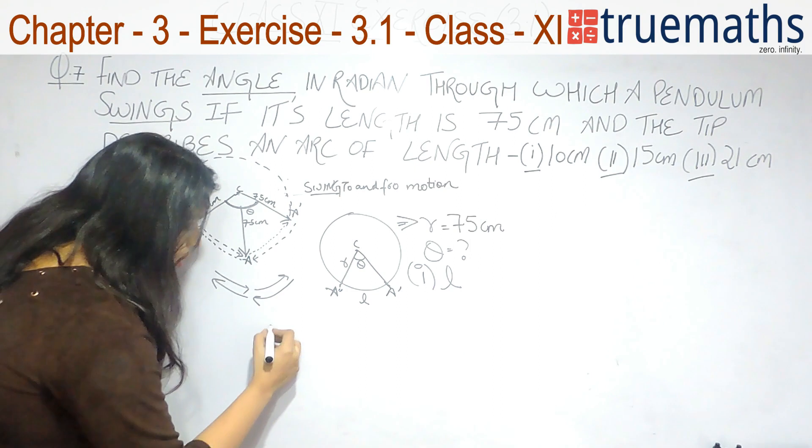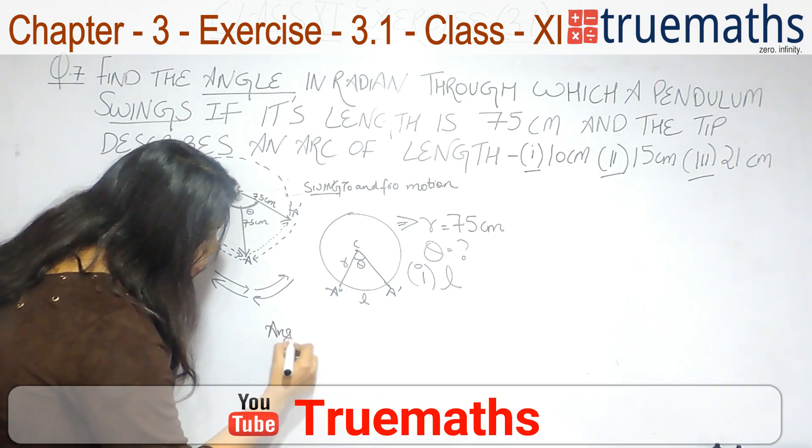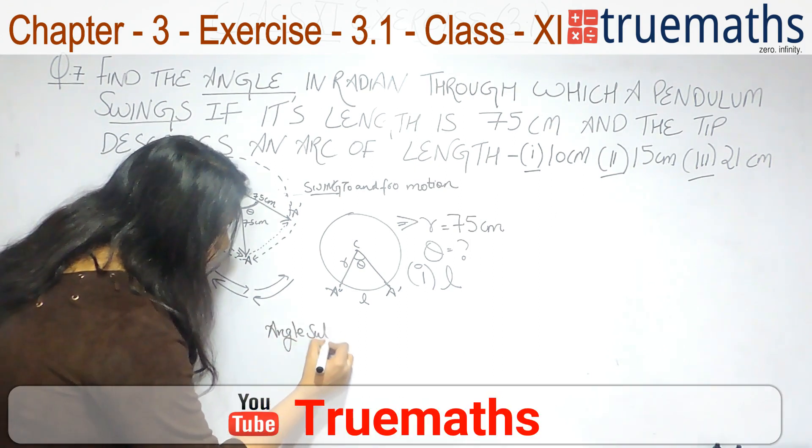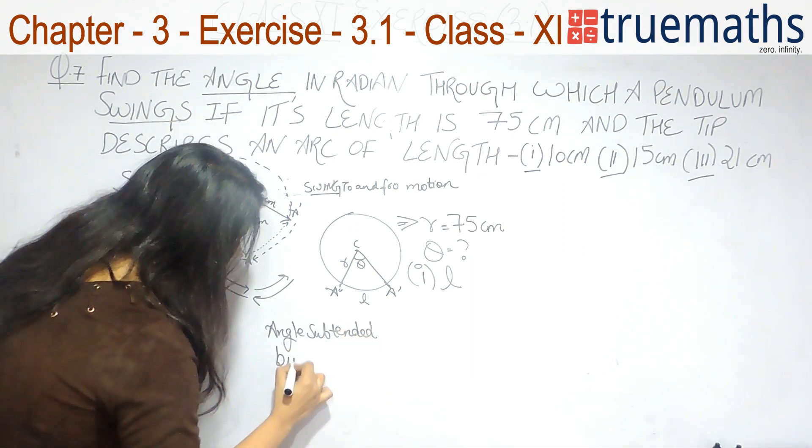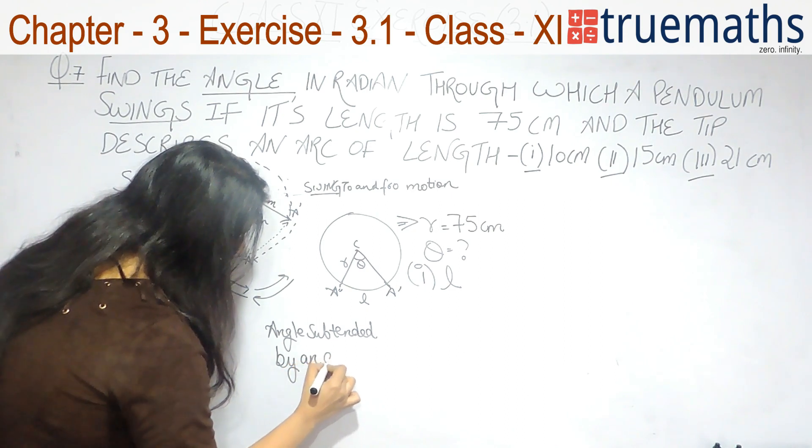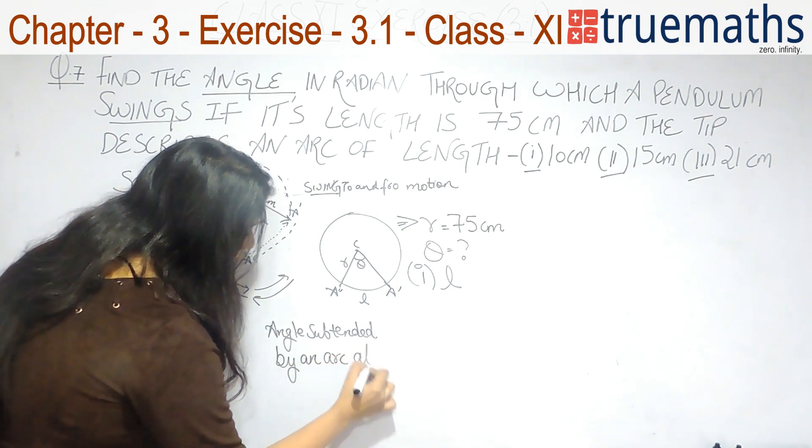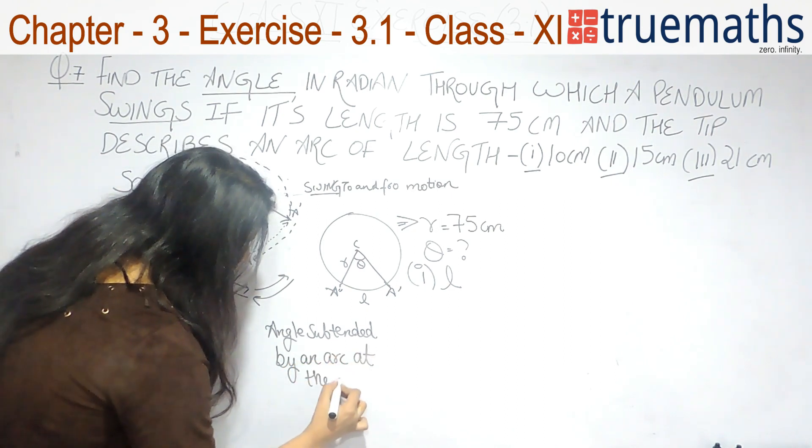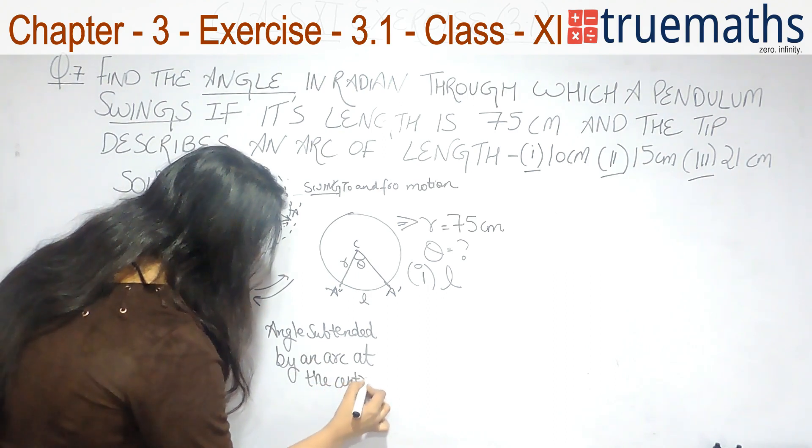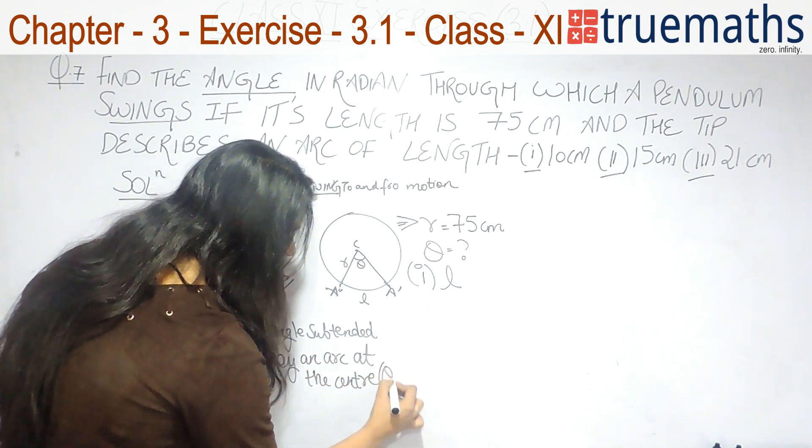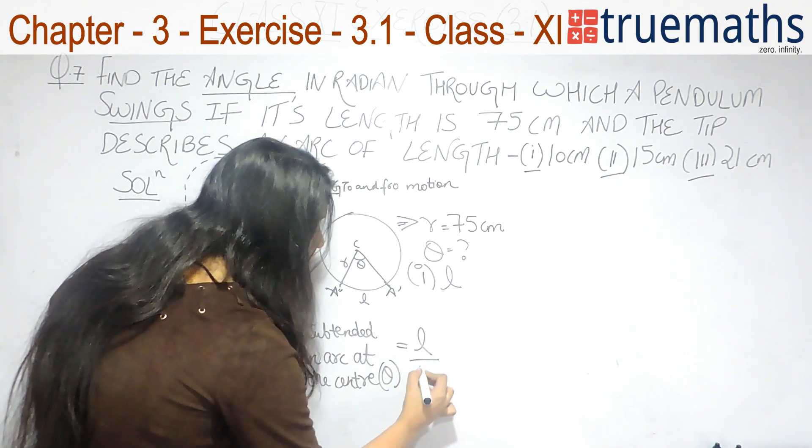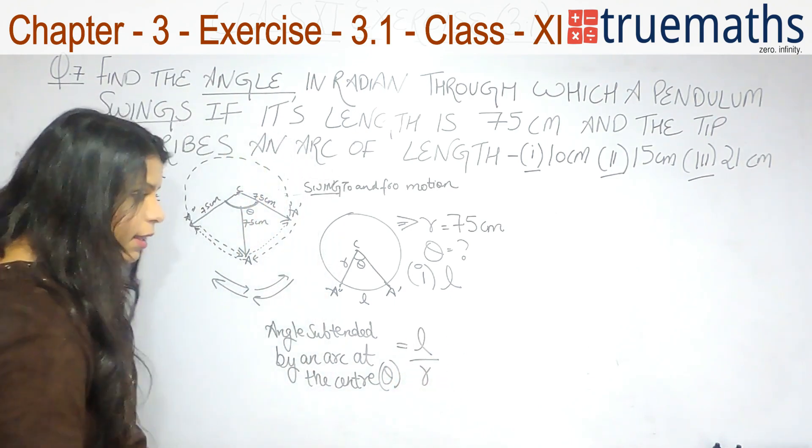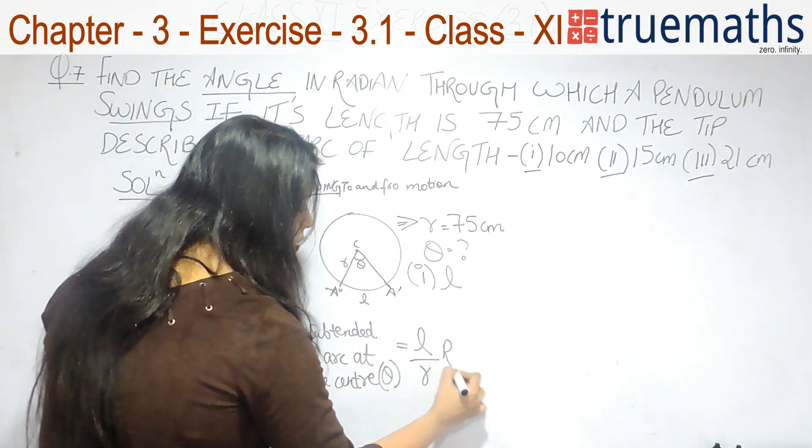We have a formula to find the value of theta. That is, the angle subtended by an arc at the center. That is, theta is equal to length of the arc divided by radius of the arc. And this value is in radians.